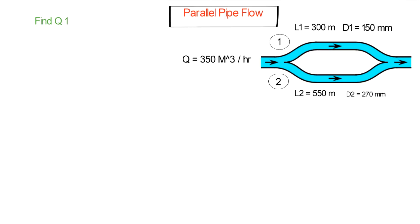We have two essential assumptions for any parallel pipe system. In parallel pipe systems, the total amount of flow rate or discharge equals the discharge in pipe one plus the discharge in pipe two.